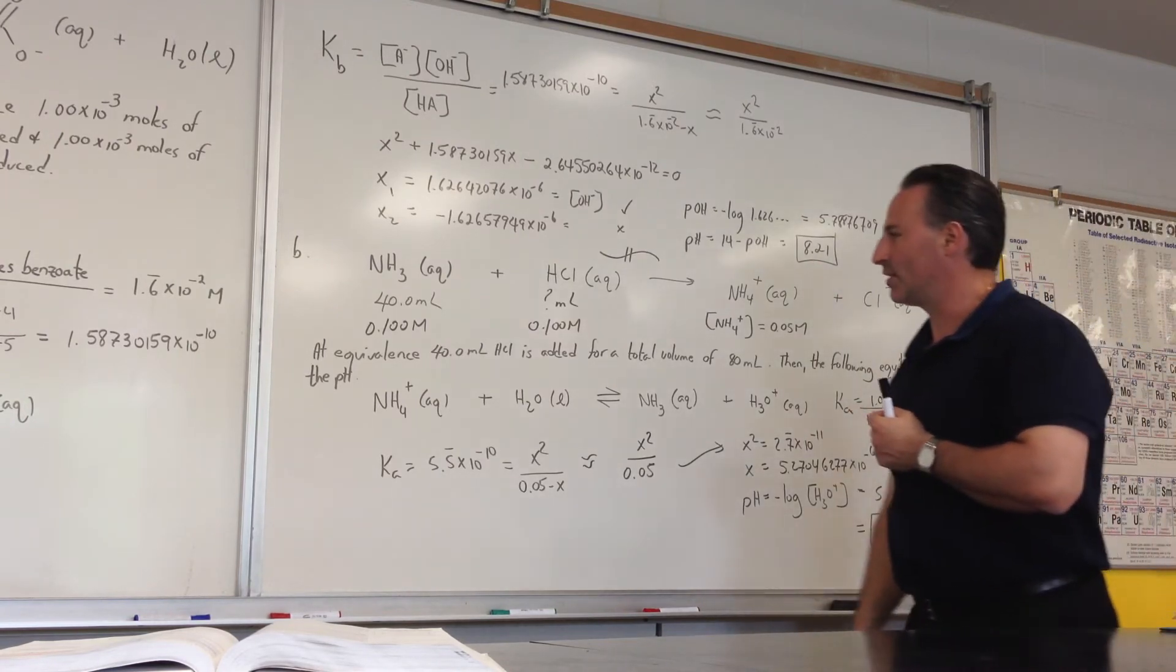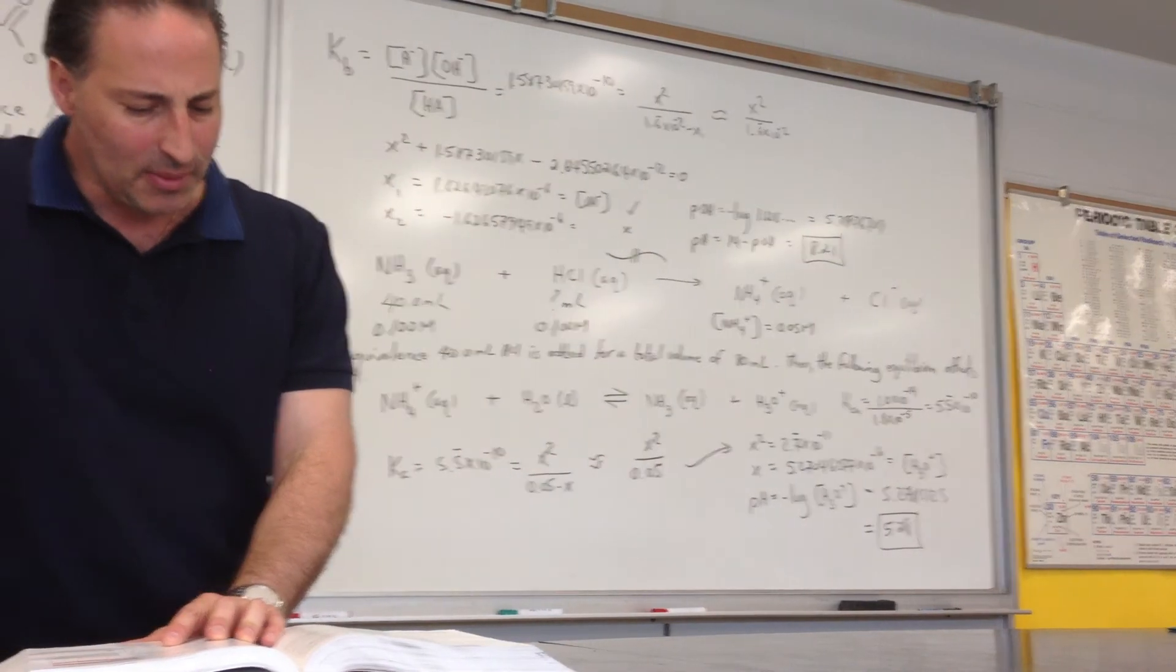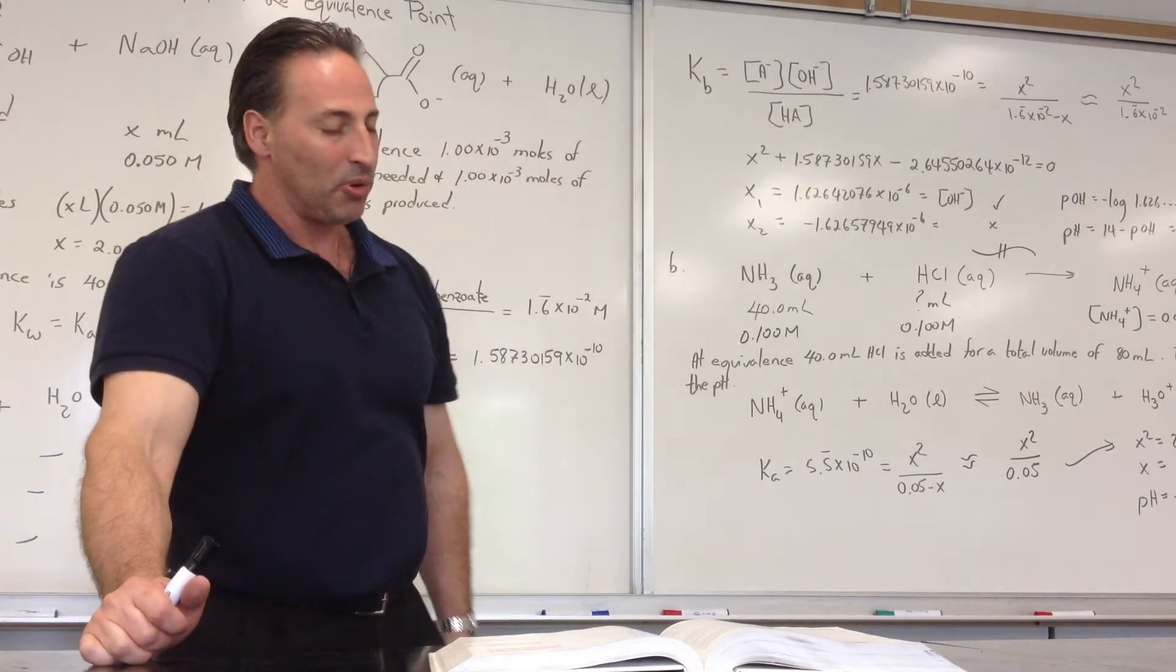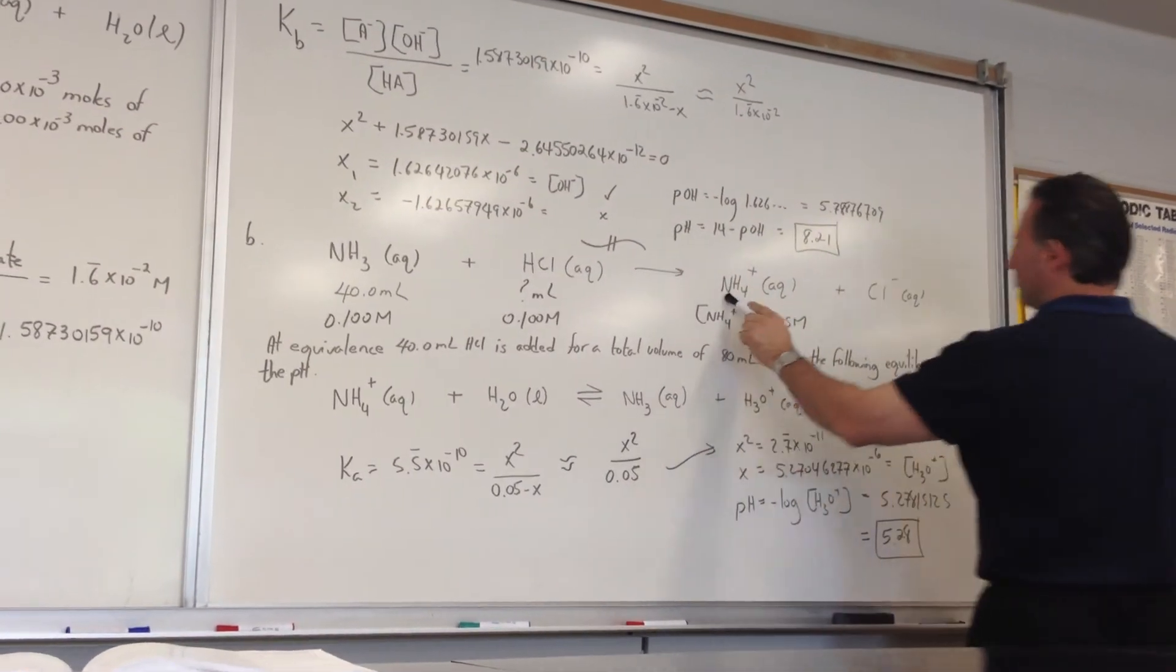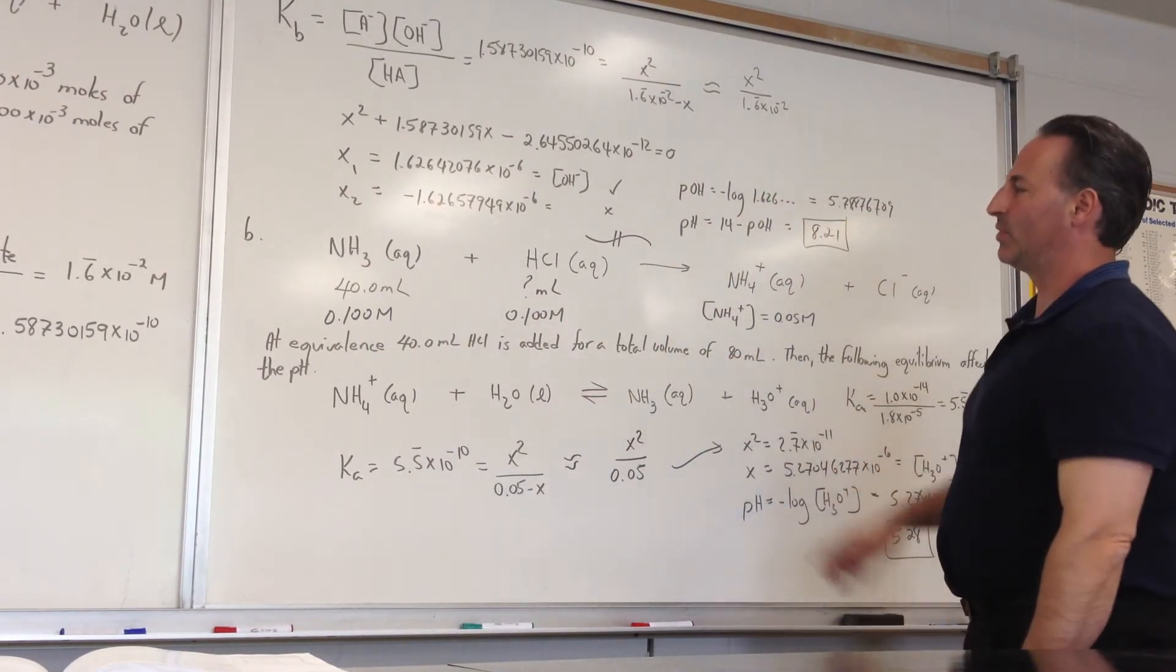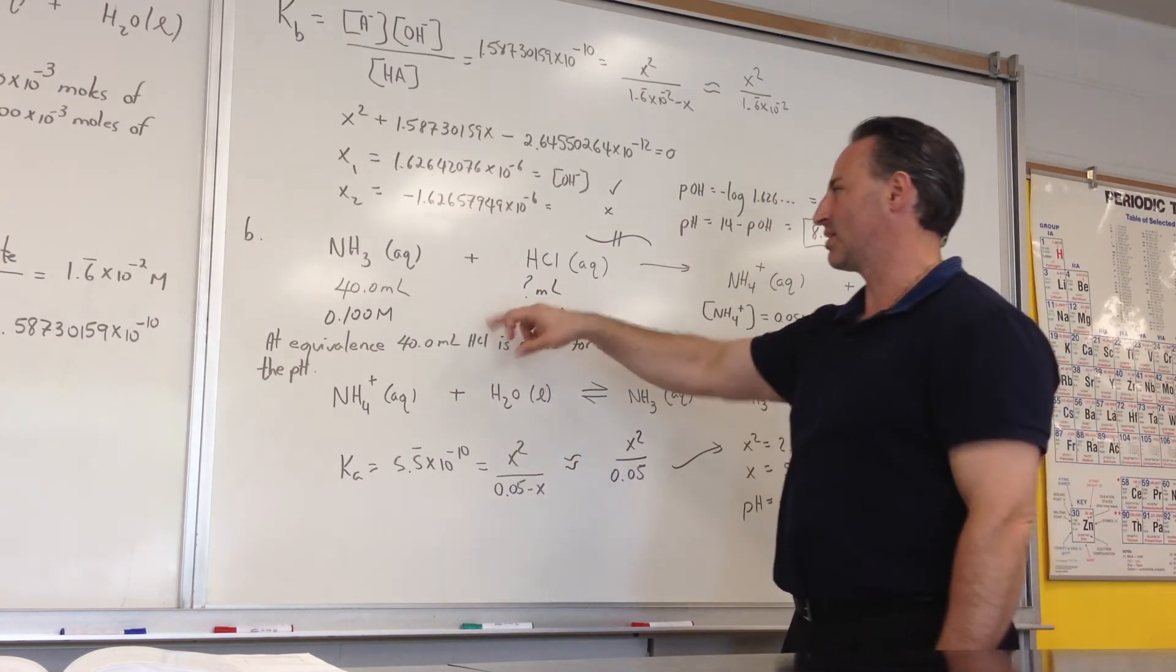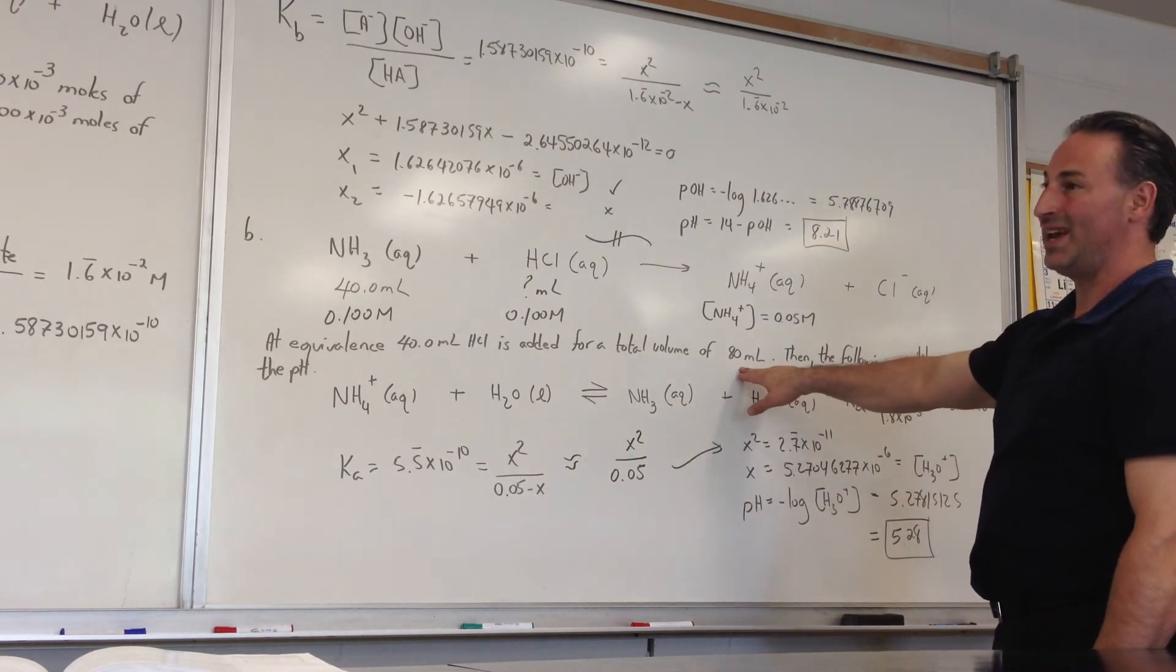In the second question, part B, it asks 40 milliliters of 0.1 molar ammonia is titrated with 0.1 molar hydrochloric acid. Here is the titration equation. It generates ammonium because you're adding a strong acid to ammonia. There's 40 milliliters of 0.1 molar. We don't know how many milliliters of hydrochloric acid we're going to need, but we can see the same concentration. So it's trivial. It's going to be the same volume because of the same concentration. So 40 milliliters of hydrochloric acid is going to be added to achieve equivalence, which means the total volume of solution is going to be 80.